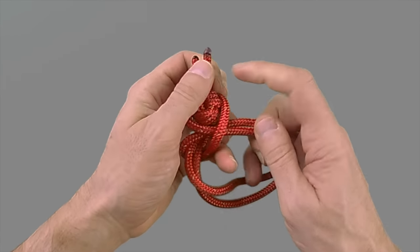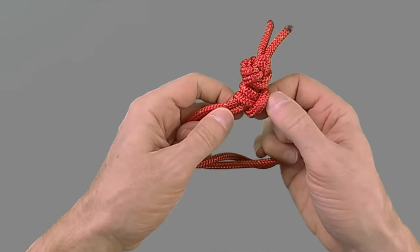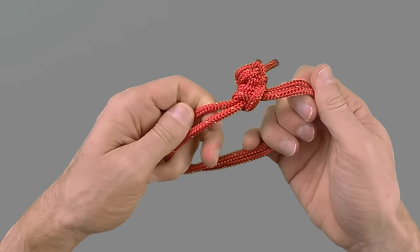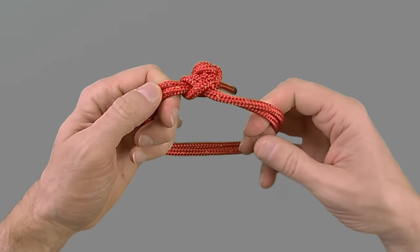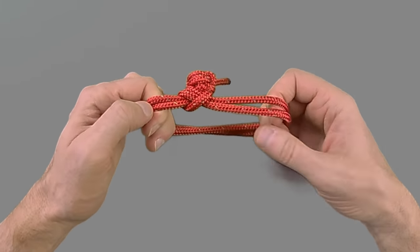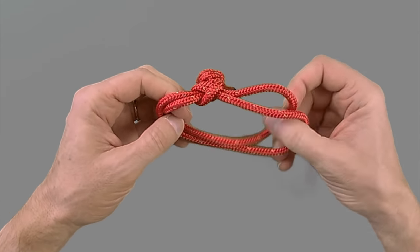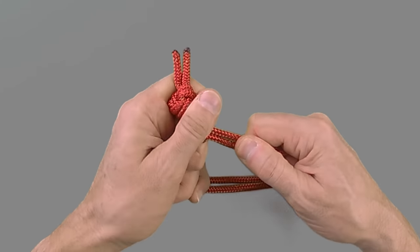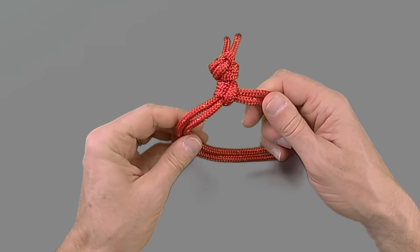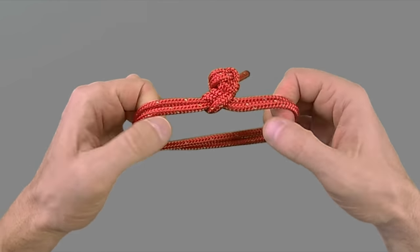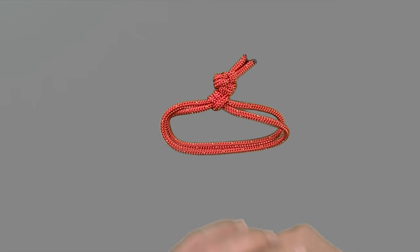This method is preferred over the loop method that we showed you in securing option number three because the lark's head has less impact on the breaking strain of the line while creating a semi-permanent finish to your soft shackles.